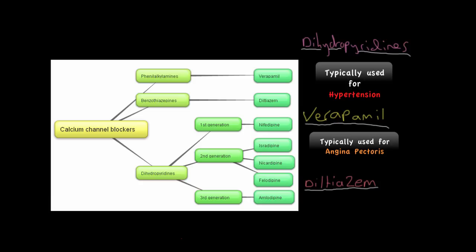Lastly, we have the benzothiazepines, which again has only one clinically relevant drug, which is diltiazem. Diltiazem really sits between the other two classes of calcium channel blocker, and is basically equally specific to the L-type calcium channels on both heart and vascular smooth muscle. It therefore can be used both as an antihypertensive and an antianginal drug.